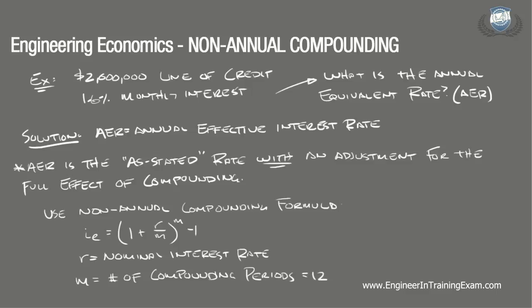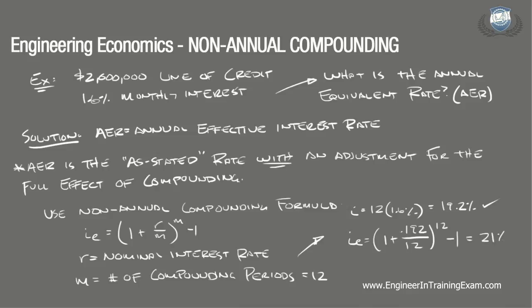The nominal interest rate is the as-stated rate without adjustment for the full effect of compounding. In this case, all that needs to be done is to note that a monthly assessment of interest occurs 12 times in a year. So I = 12 × 1.6 = 19.2%. This is our nominal interest rate. Plugging the values in, the effective interest rate is then I = (1 + 0.192/12)^12 − 1, which is equal to 21%. So the annual equivalent rate (AER) on this line of credit is 21%.